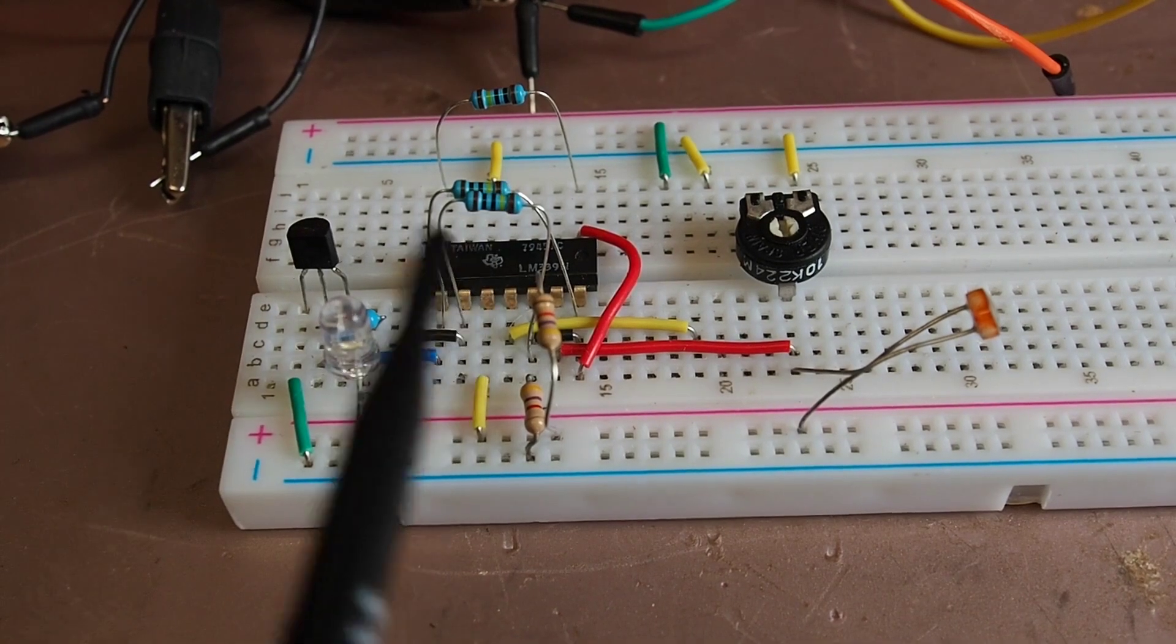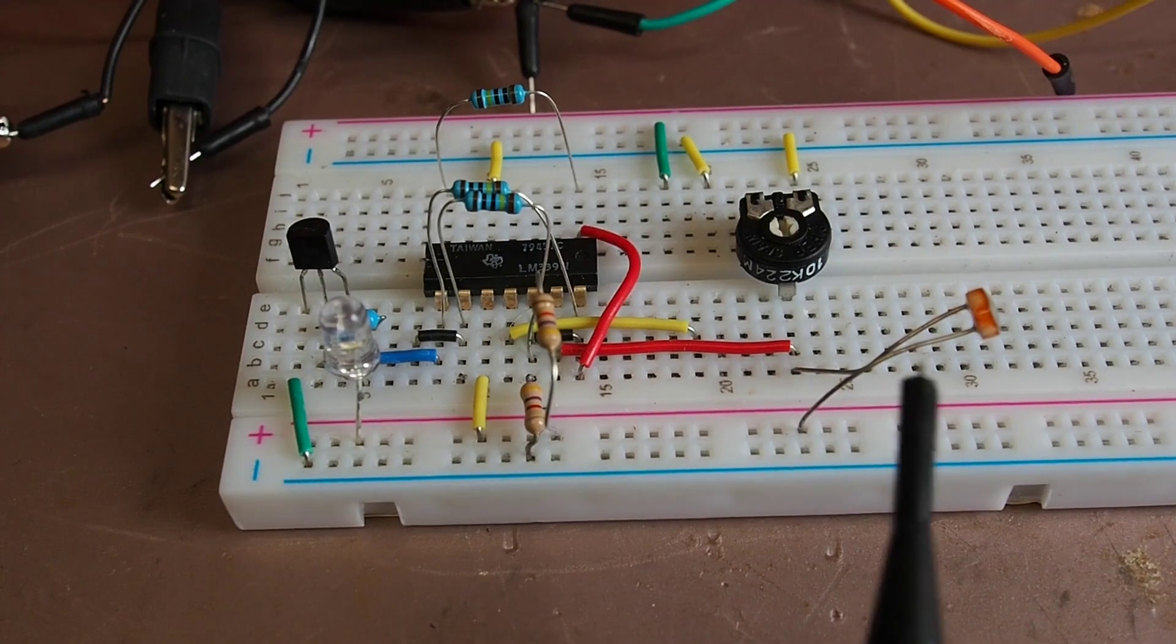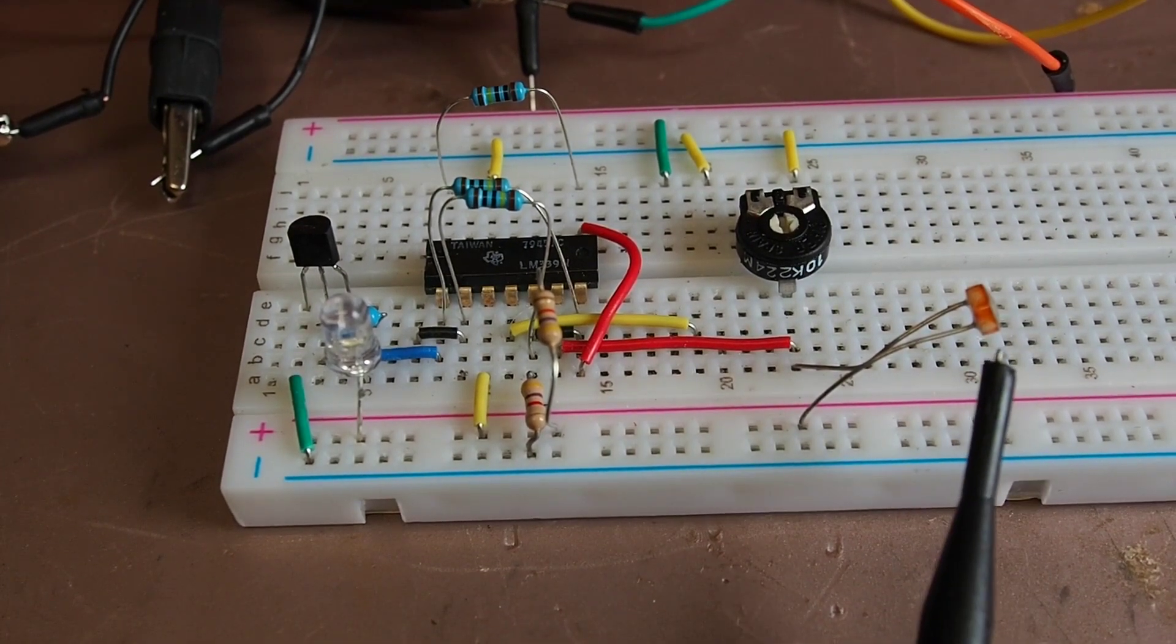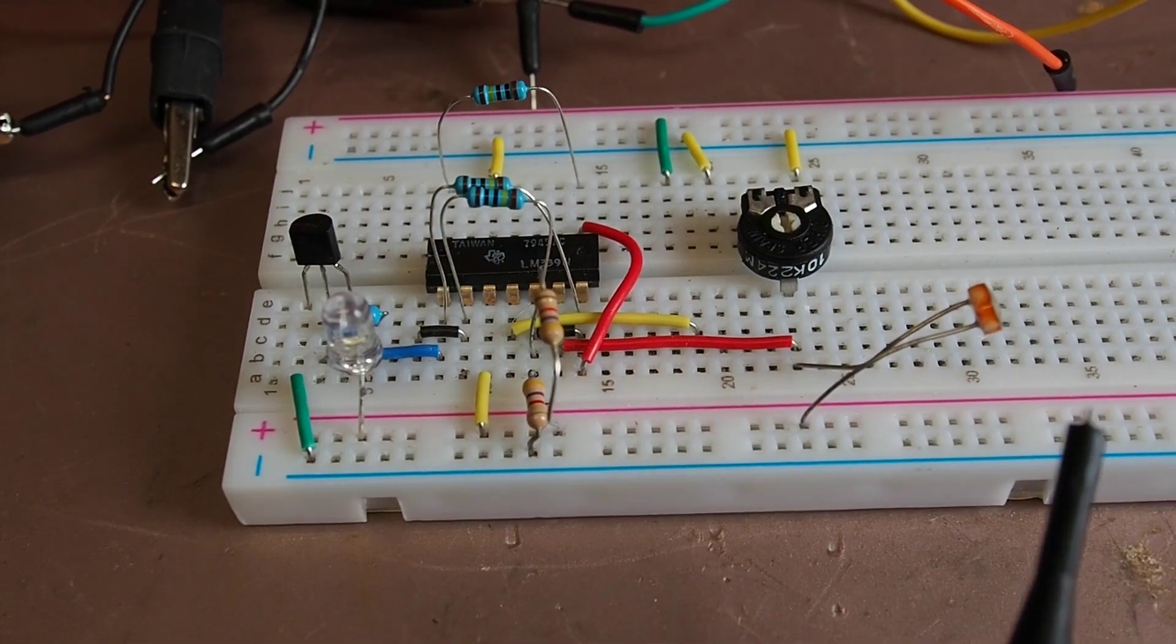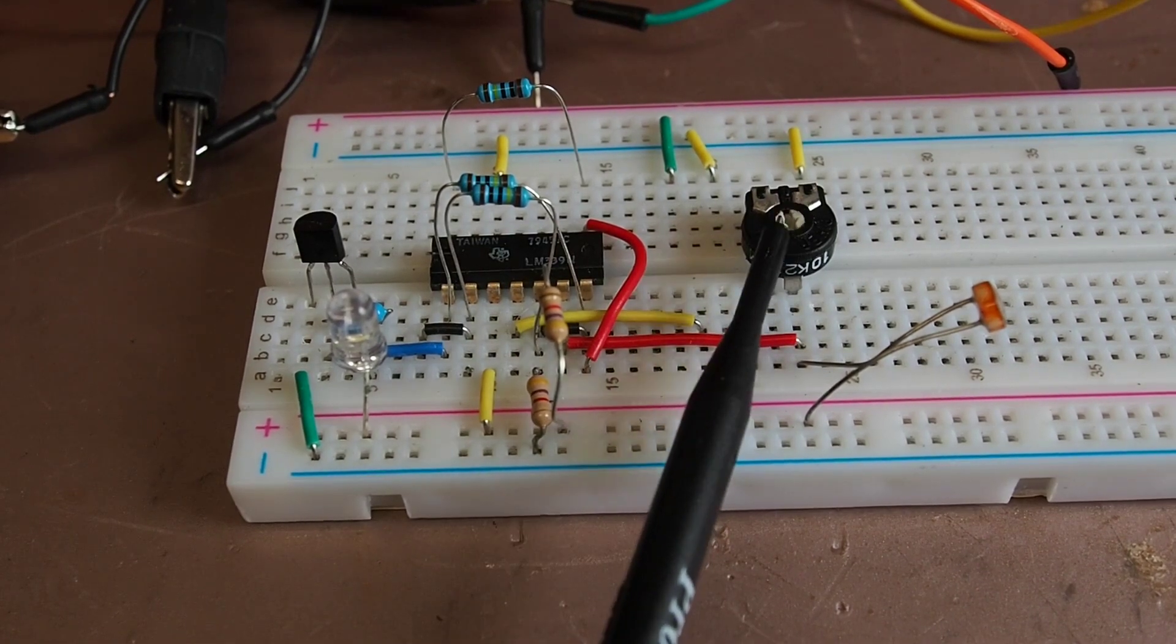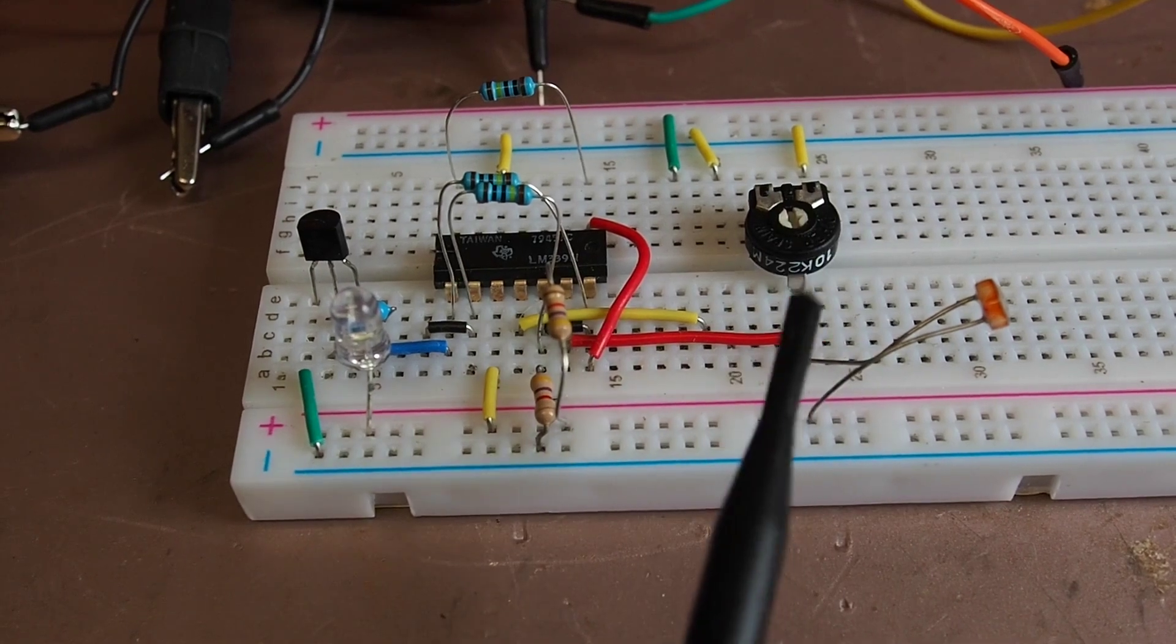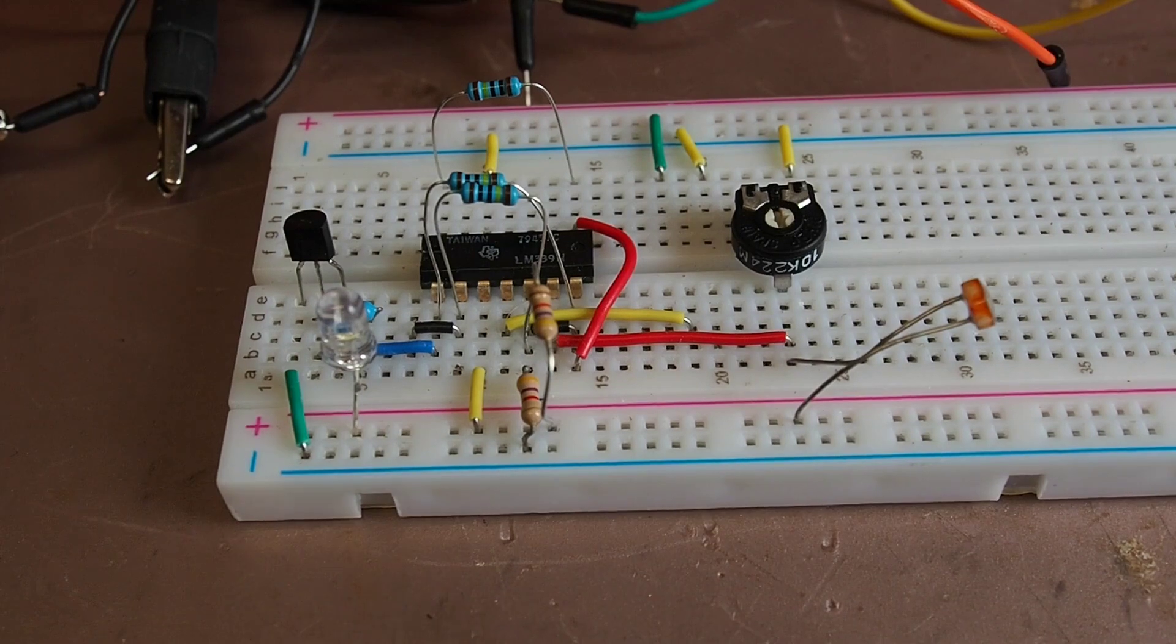This time I've got a light-dependent resistor here pointing at the window—it's a reasonably nice day in North Yorkshire—and this is the 10k pot which forms the other half of the voltage divider resistive network, which effectively is just the sensitivity.